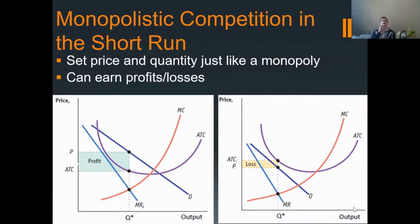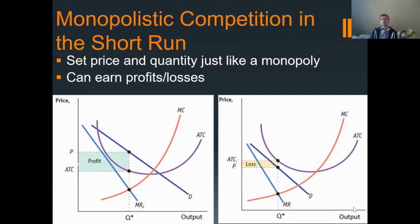Monopolistic competition in the short run looks like a monopoly graph, really. The ATC isn't as large — the ATC of a monopoly would be sort of stretched out a bit longer over a larger quantity. But that's really kind of the only difference. Everything else is set exactly like a monopoly.